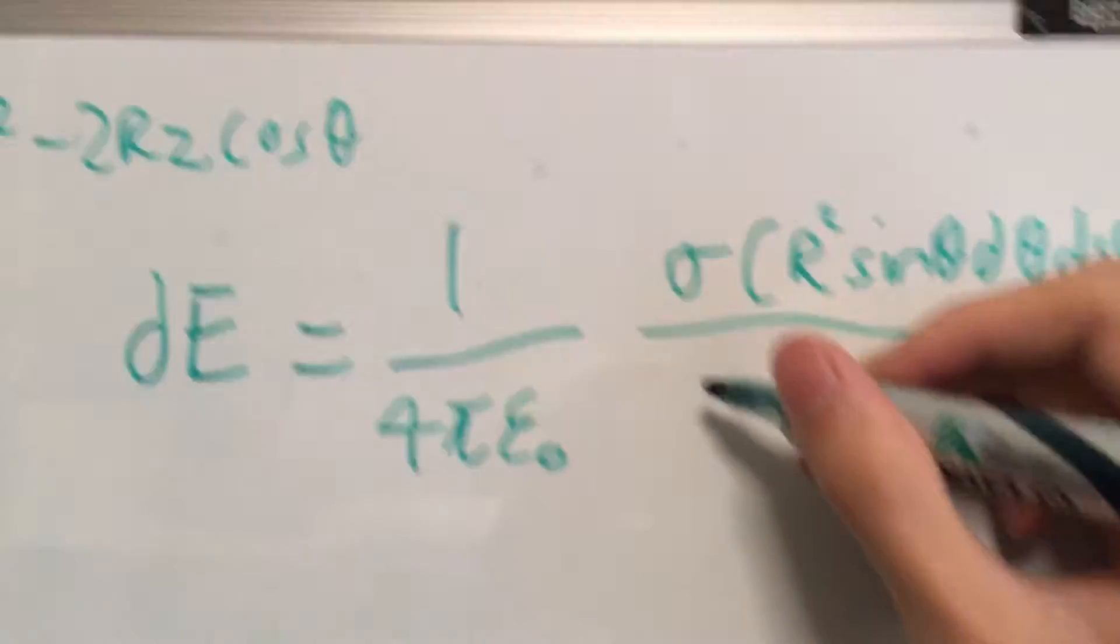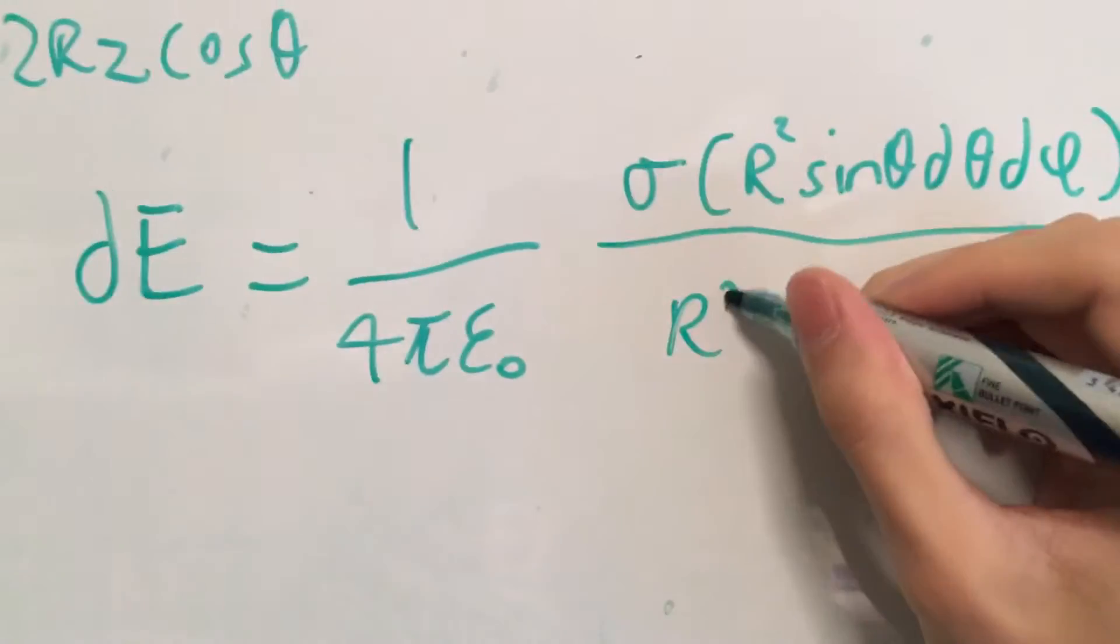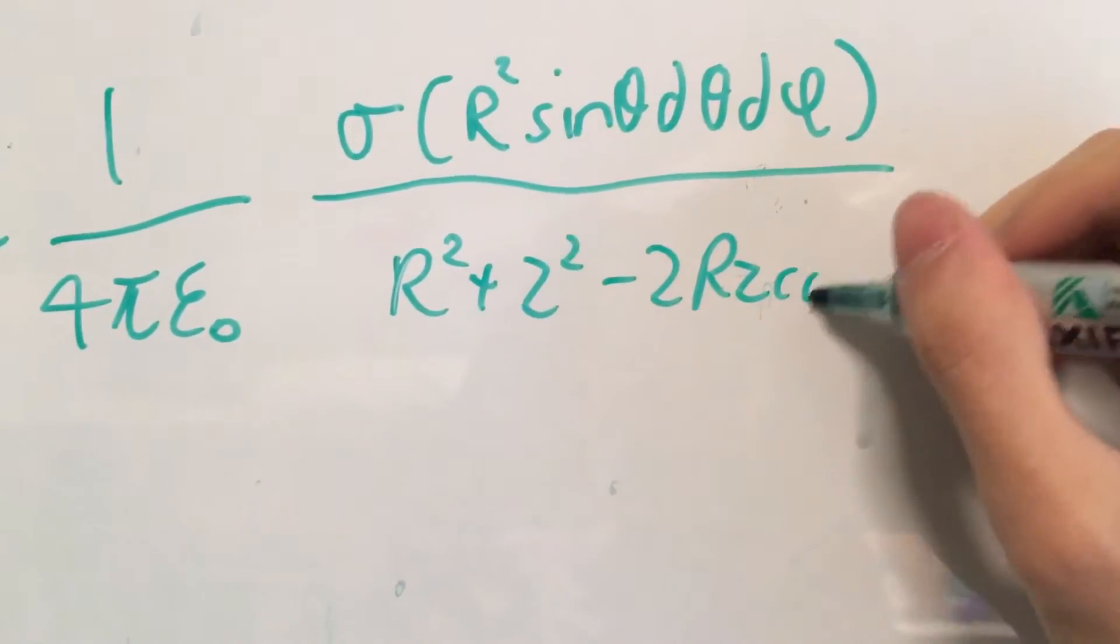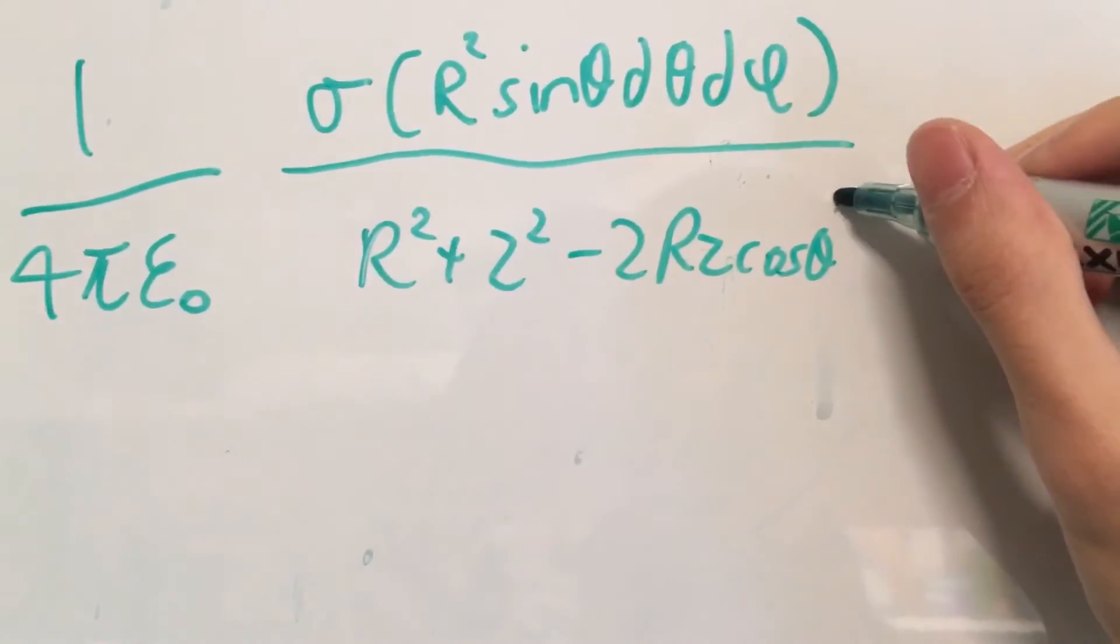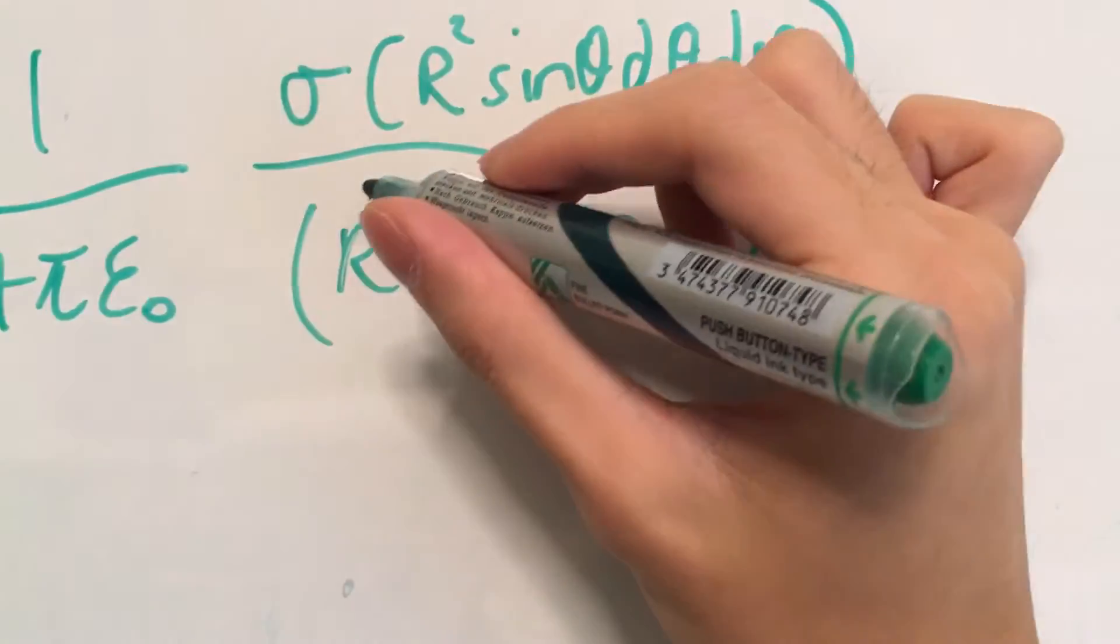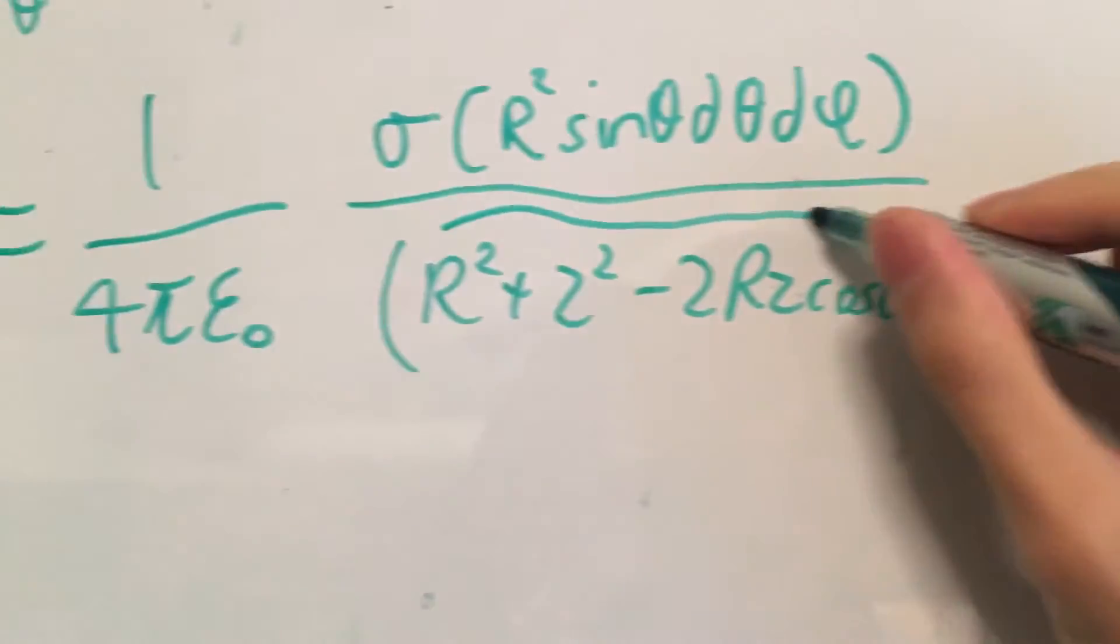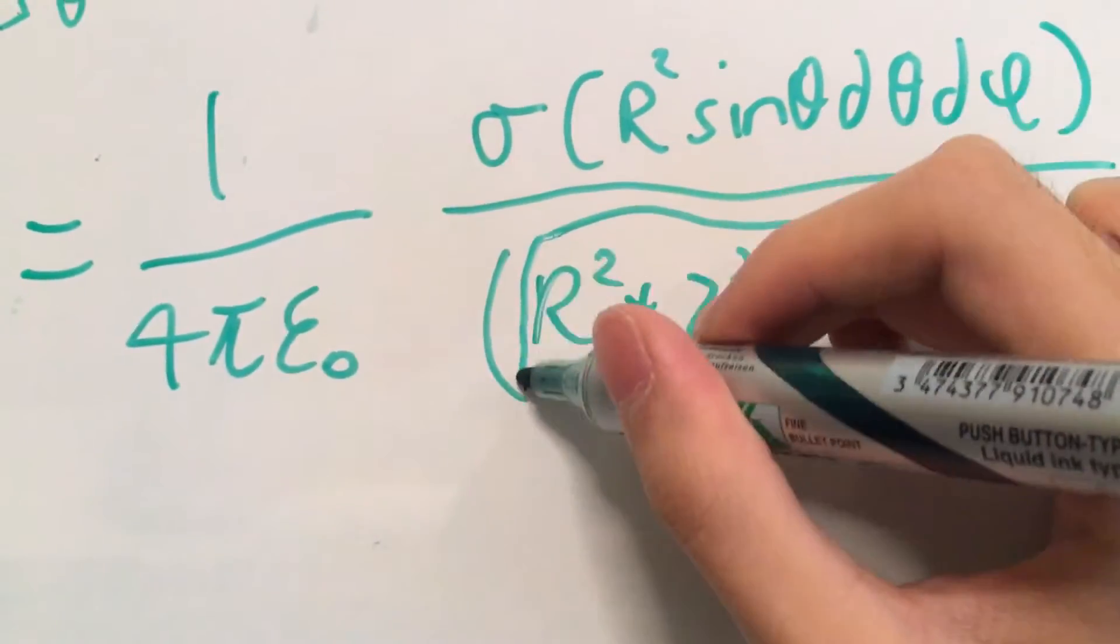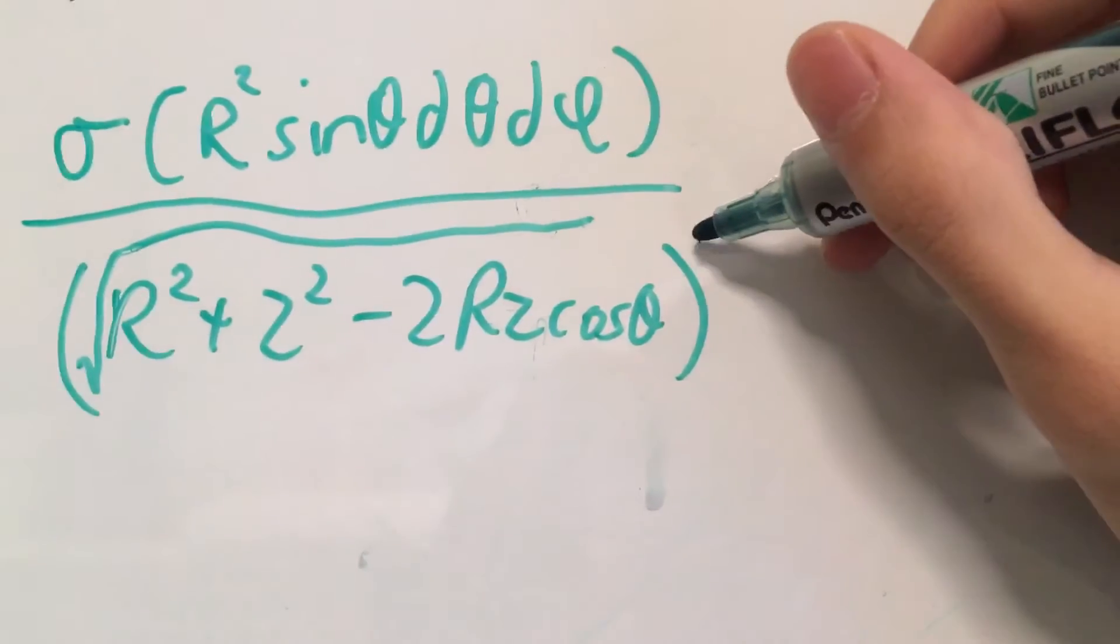And we'll substitute this into our differential. And since this L has a square on top, we'll have to square it again.